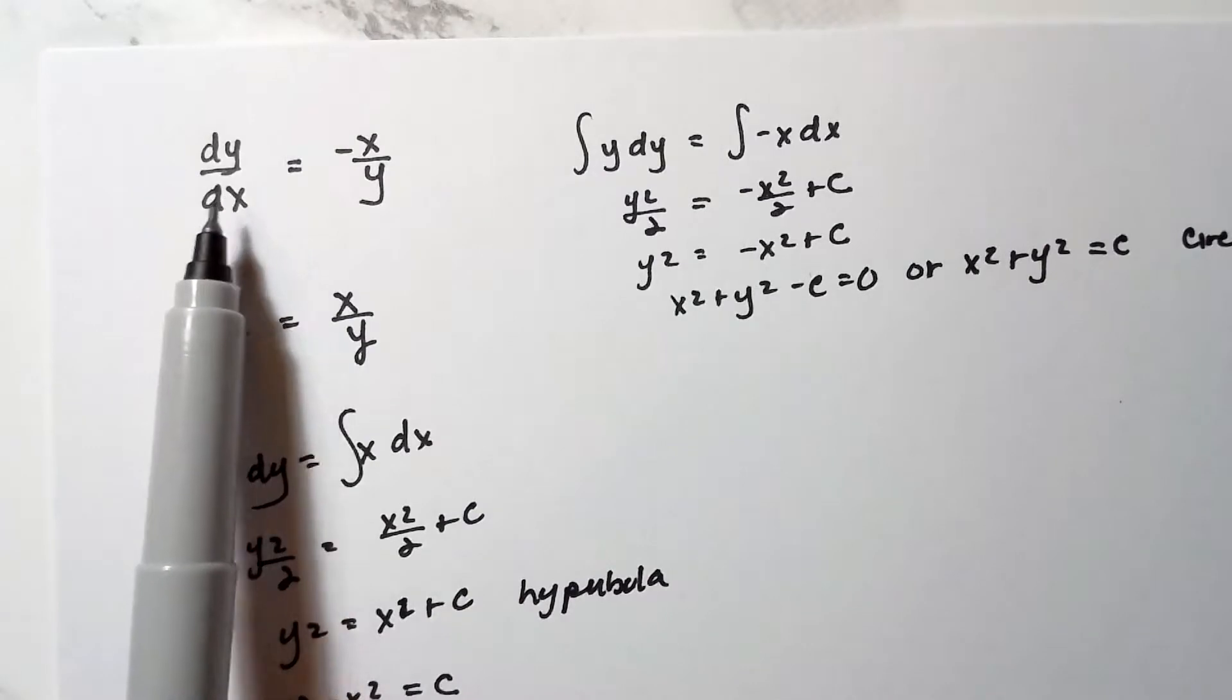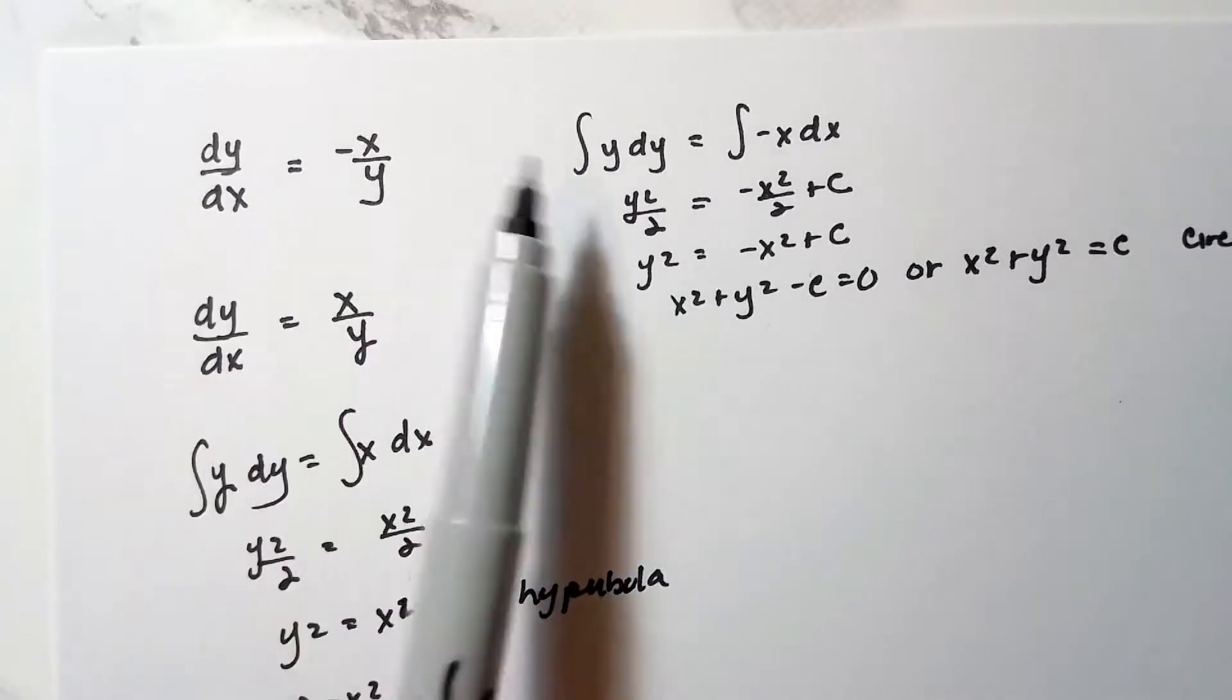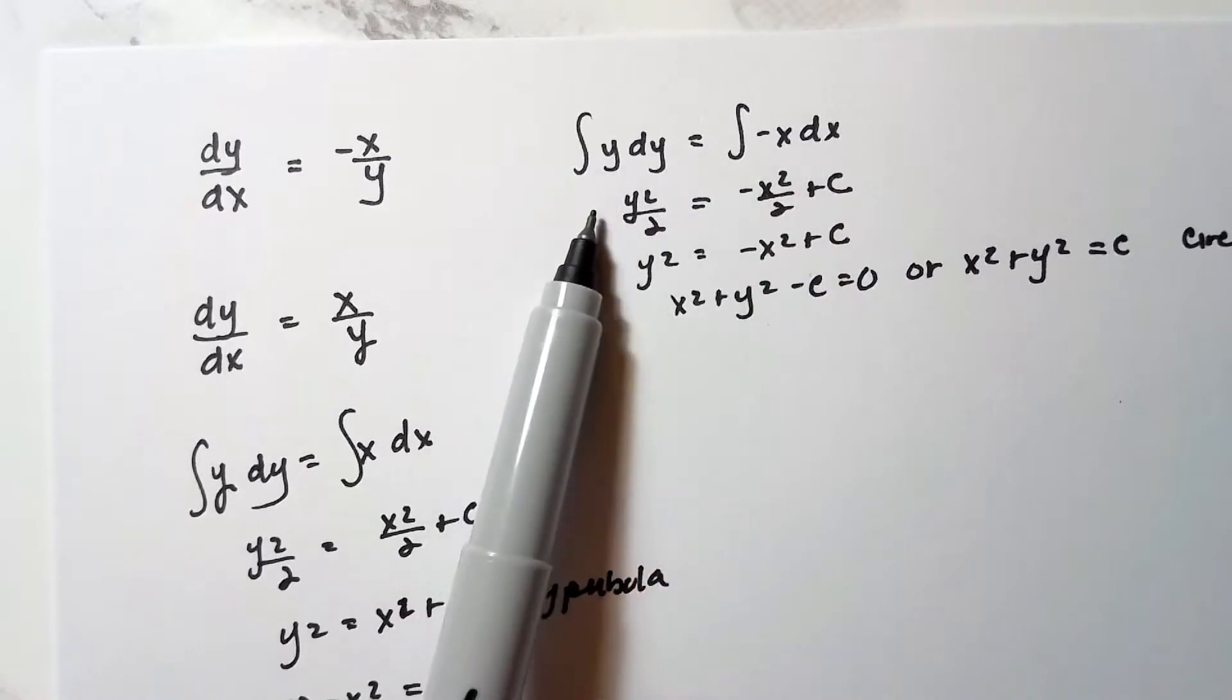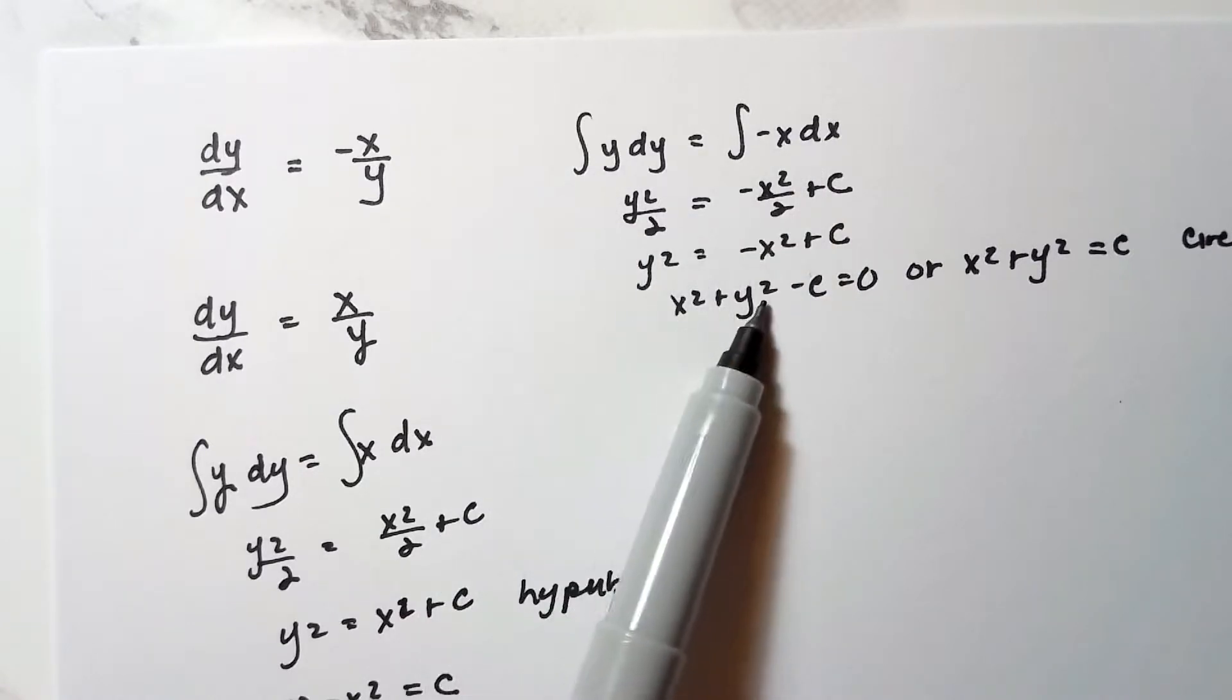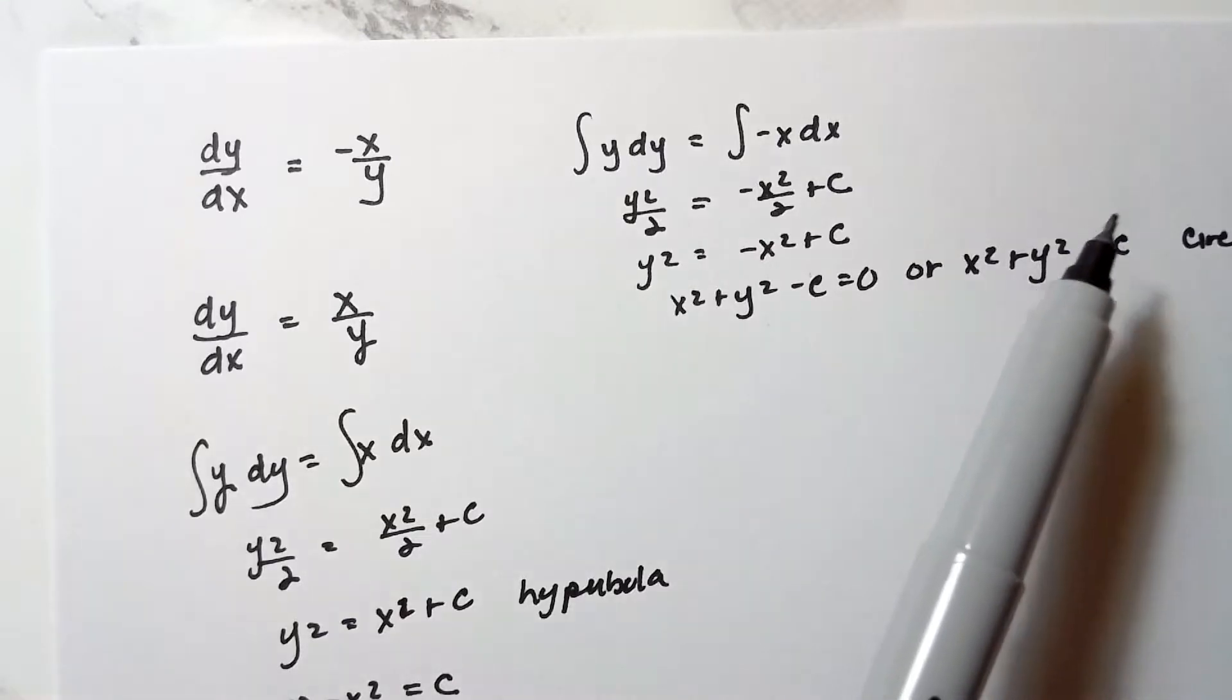If we have this differential equation here, negative x over y, we separate the variables and we integrate both sides. What we get is the equation of a circle, right? x squared plus y squared is equal to r squared.